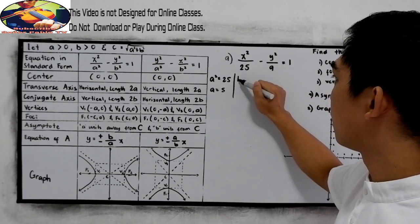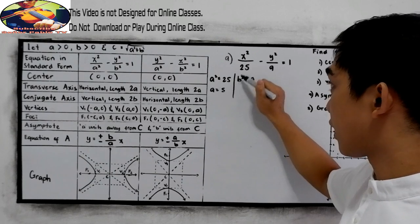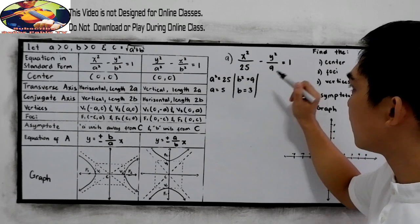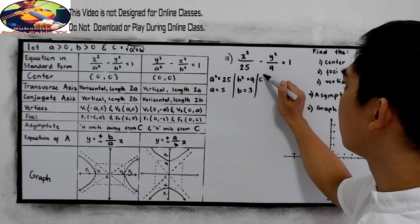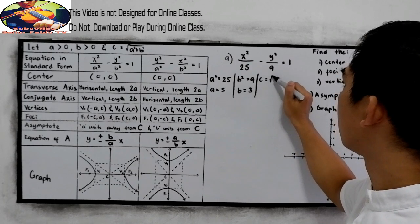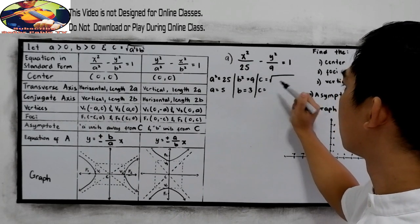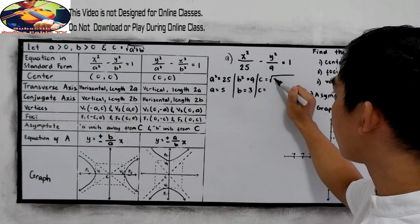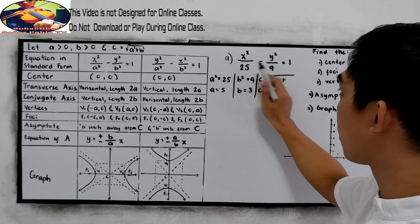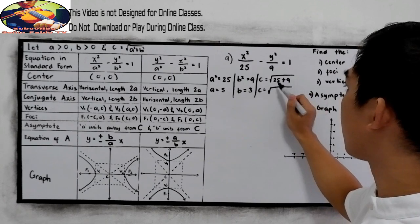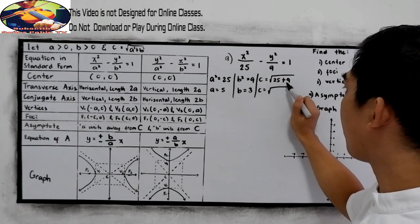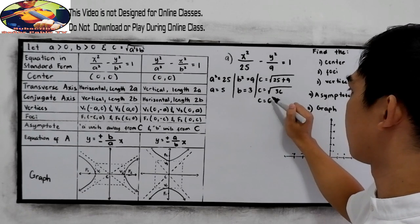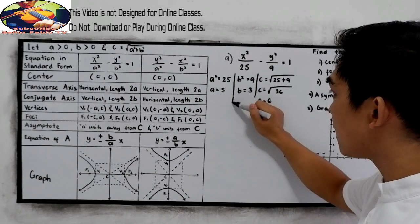Next, B squared is equal to 9 — extracting the square root, B is equal to 3. Now for C: C is equal to the square root of A squared plus B squared, which is the square root of 25 plus 9, that is the square root of 36. So our C is 6. Now we have values for A, B, and C.